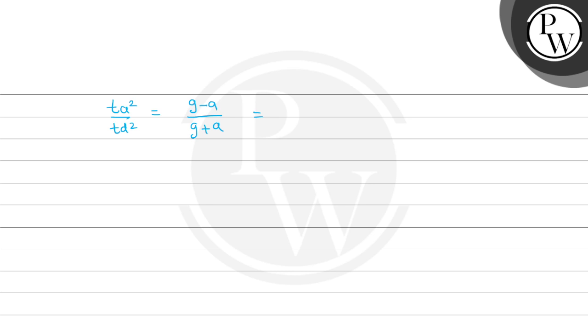Now g ki value hai 10 hai aur a ki value 2 given hai. So 10 minus 2 divided by 10 plus 2, this equals 8 divided by 12 or 2 divided by 3.